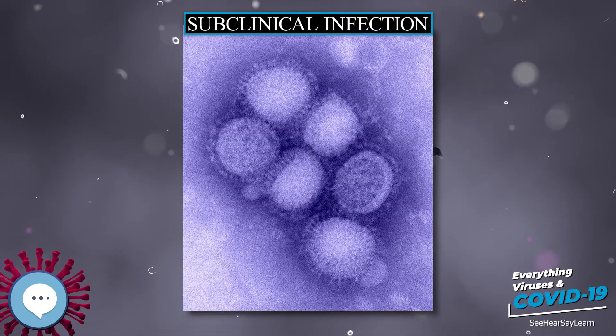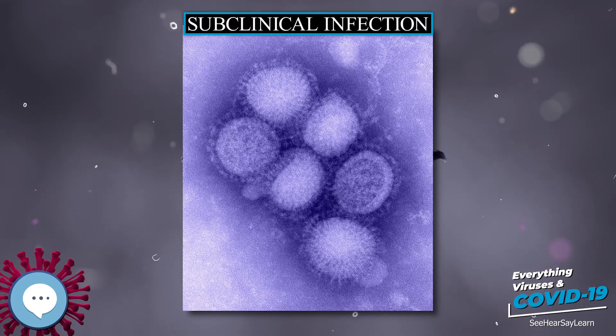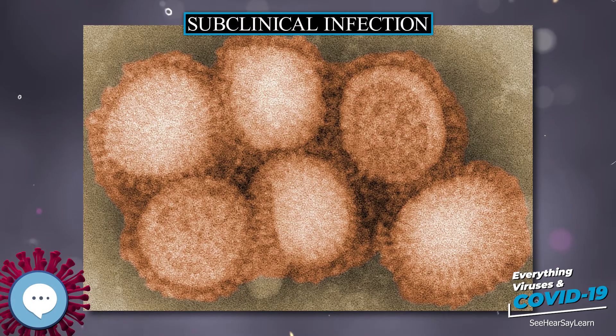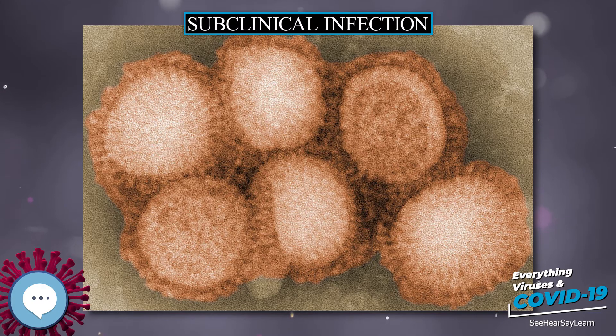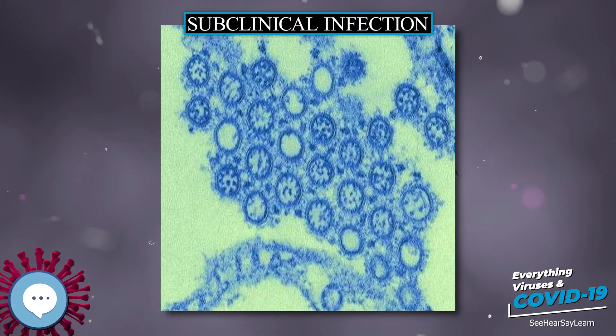A subclinical infection, sometimes called a pre-infection, is an infection that, being subclinical, is nearly or completely asymptomatic — no signs or symptoms.